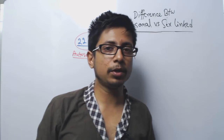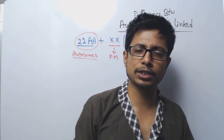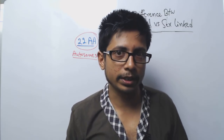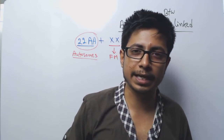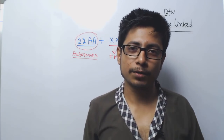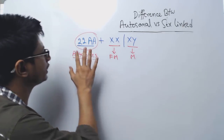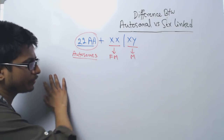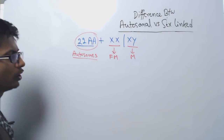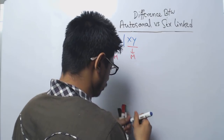If we talk about autosomal inheritance, it is the general mode of inheritance. All the genes that produce proteins in our body — like hepatocyte cells that produce enzymes for digestion and metabolism — those genes are present mostly in the autosomes. For example, let us say a disease is carried by an autosome.